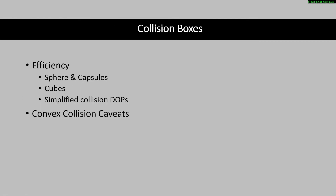Then we're going to talk about our collision boxes. We'll talk about efficiencies, the difference between spheres, capsules, cubes, and simplified collision DOPs. We'll also talk about things to be careful about, such as convex versus concave collision caveats.